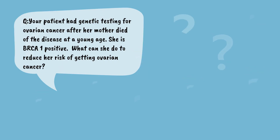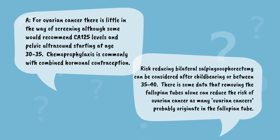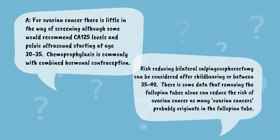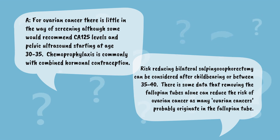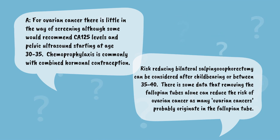Your patient had genetic testing for ovarian cancer after her mother died of the disease at a young age. She is BRCA1 positive. What can she do to reduce her risk? For ovarian cancer, there is little in the way of screening, although some would recommend CA-125 levels and pelvic ultrasound starting at age 30 to 35. Chemoprophylaxis is commonly combined with hormonal contraception. Risk-reducing bilateral salpingo-oophorectomy can be considered after childbearing or between 35 to 40 years of age. There is some data that removing the fallopian tubes alone can reduce the risk of ovarian cancer, as many ovarian cancers probably originate in the fallopian tube.